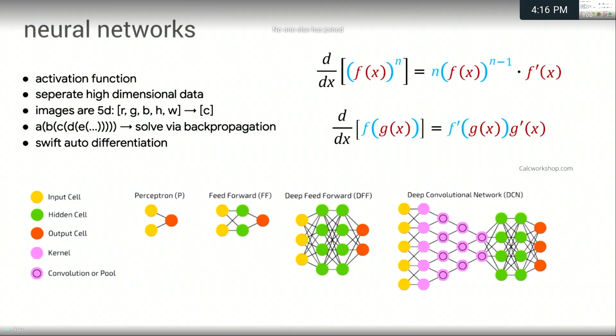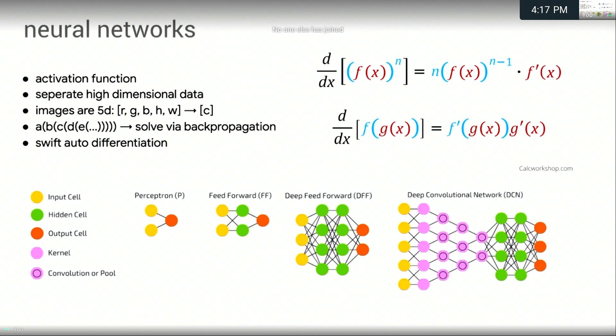Neural networks were kind of a curiosity for many years. A lot of traditional machine learning is centered around reducing problems to 1D or trying to reduce the search space. Neural networks go the opposite direction. They basically learn an activation function and their power is that they can learn any activation function. As a result, they're really good at separating high-dimensional data. Images, although we don't think of them this way, to a computer are a five-dimensional problem.